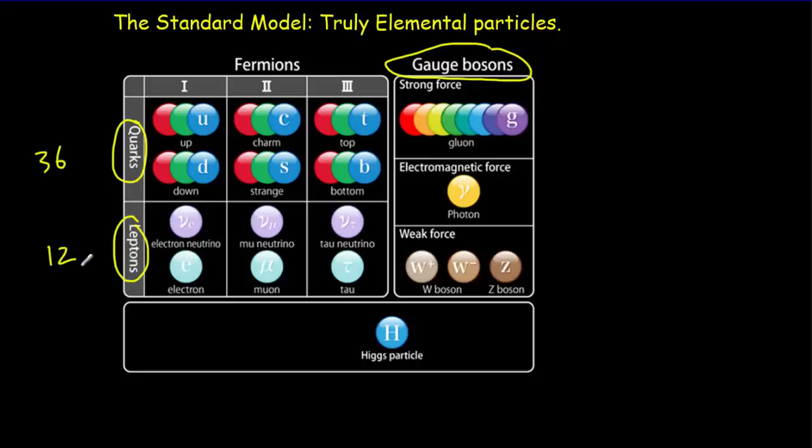The gauge bosons are the exchange particles. We've got exchange particles for each one of the fundamental forces. It's the gluon that's responsible for the strong force. It turns out the gluons can come in different colors. They're not really colors, but it turns out the way that colors combine to make new colors is kind of similar to the way that quarks and gluons combine.